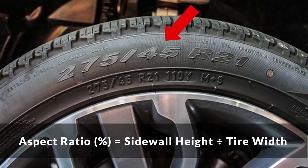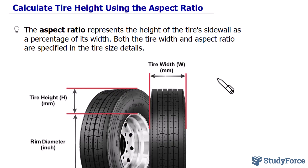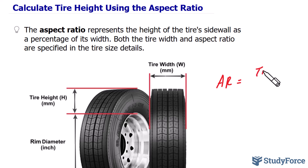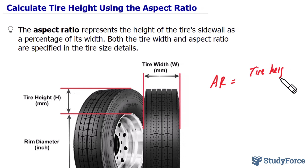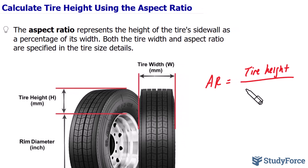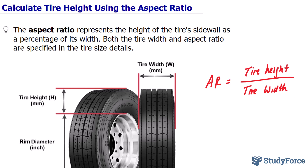Let me show you what that looks like mathematically. The aspect ratio, which I'll represent as AR, is equal to the tire's sidewall height divided by the tire width. And since the aspect ratio is a percentage, whatever number you get after dividing these two, you multiply it by 100%. However, in this video, I'll be showing you how to calculate the tire height when given the tire size.